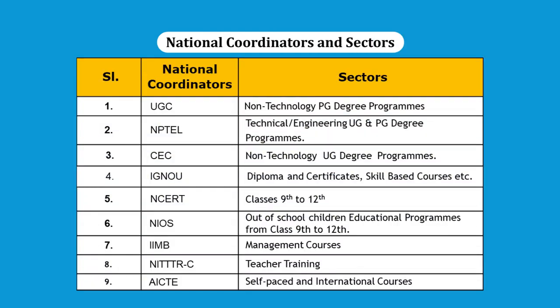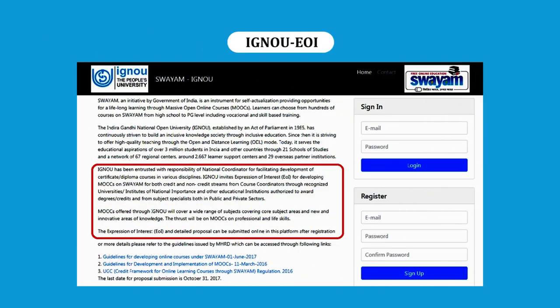A list of all national coordinators appointed by the ministry is provided. Each national coordinator is assigned a specific thrust area and is responsible for developing courses pertaining to those areas. Shown here is a screenshot of Indira Gandhi National Open University's login page, which shows the university inviting expressions of interest from experts in different areas as course coordinators to develop MOOCs in both credit and non-credit streams. All national coordinators function in a similar way to develop courses made available on Swayam.